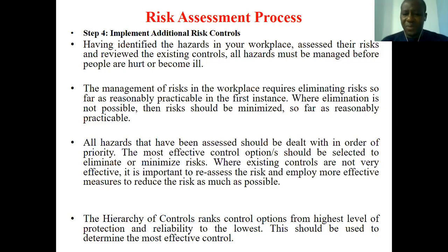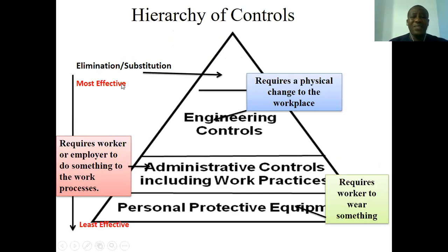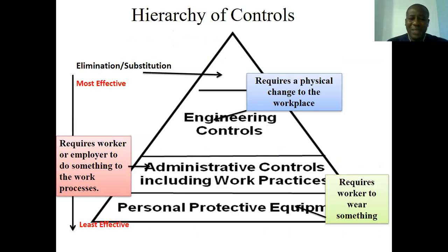The hierarchy of control runs from the highest to the lowest control option. At the apex — the top — we are talking about elimination and substitution. This is the most effective: you simply eliminate the risk or substitute it with something else. In the middle we look at physical changes to the workplace, specifically engineering controls. It might be the layout of the place, and these engineering controls are less effective in that order.